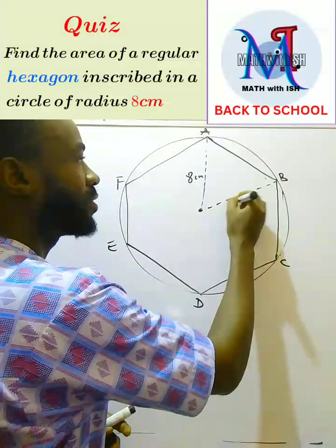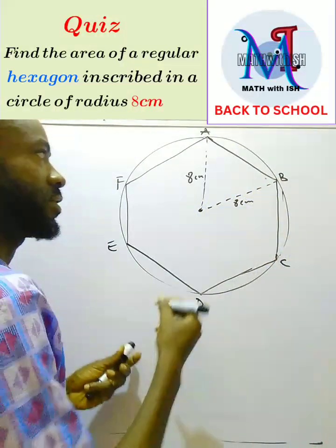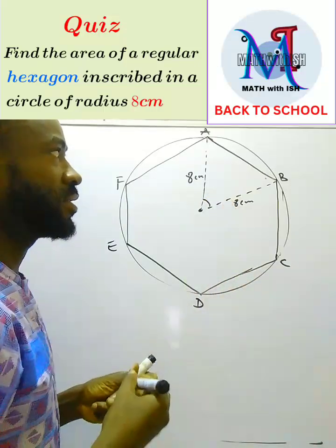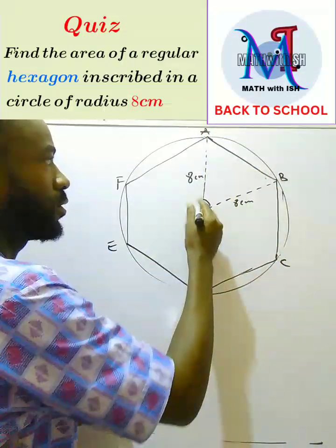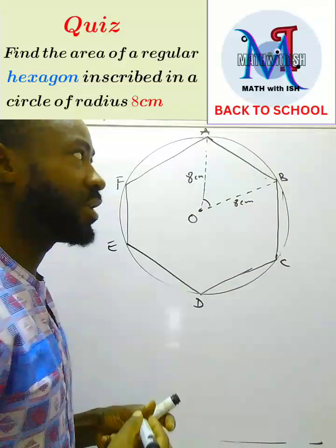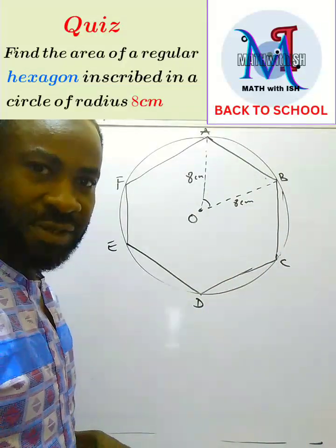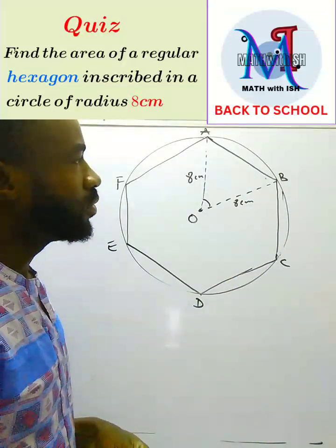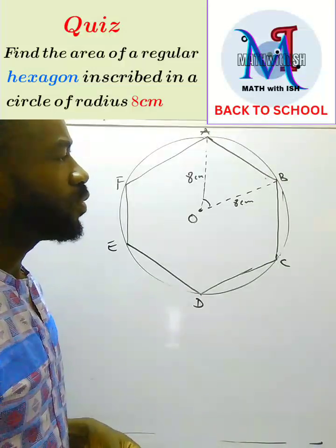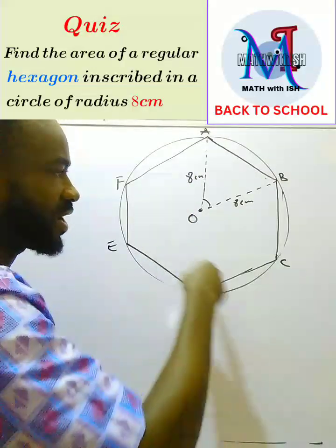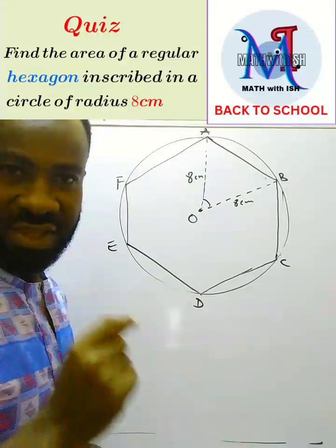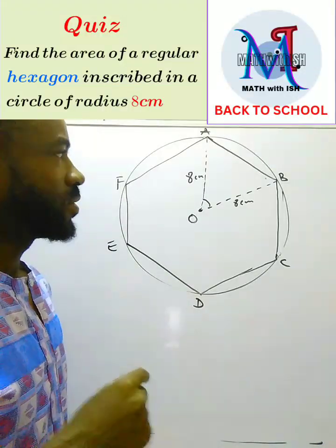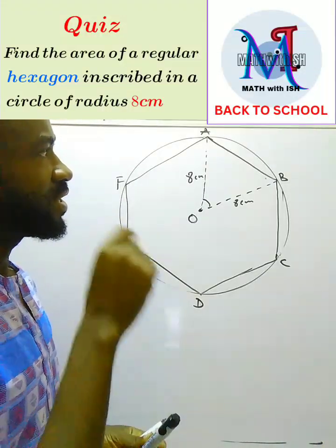Which means I can map out a sector. I can map out a sector, so I can map out a sector. Which means that if I really want to get the area of this hexagon - remember what we need to get is the area of the hexagon and not the area of the circle. So if I want to get the area of this hexagon...